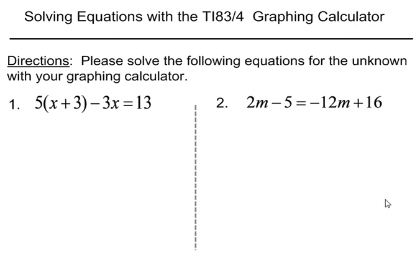We're going to show you how to do this on your calculator. The directions say please solve the following equations for the unknown with your graphing calculator. In this first problem, we see five times the quantity of x plus three, minus 3x equals 13. The one thing I'm going to do is think of this as two expressions, one to the left of the equal sign and one to the right. The one on the left, I'm going to call y1, and the one on the right, I'm going to call y2.